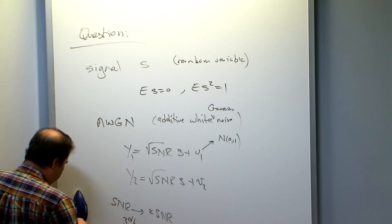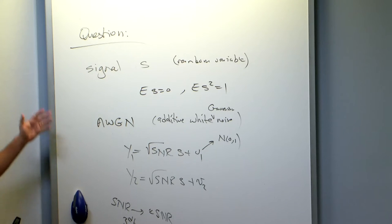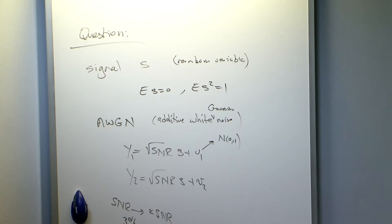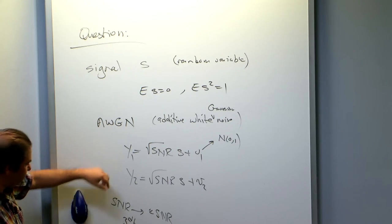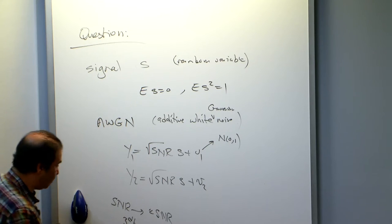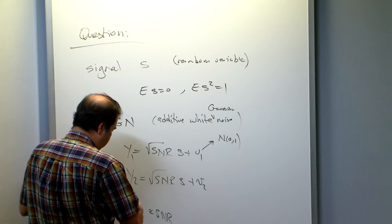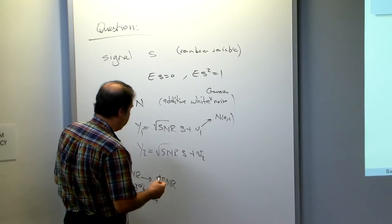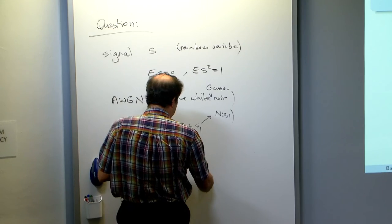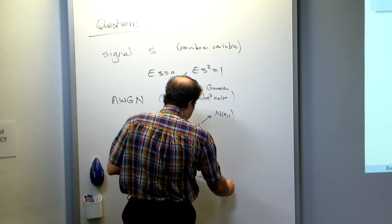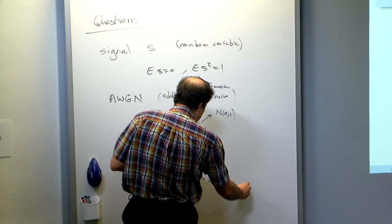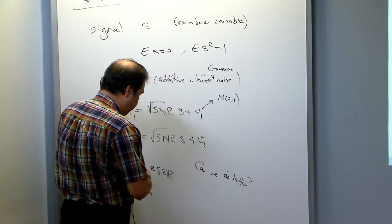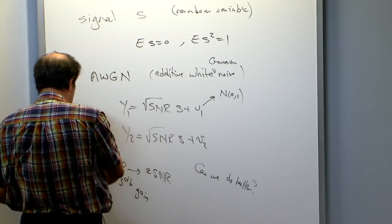This is by and large what is always done. This is real time — there's no coding going on. I have a single random variable to convey and I get two channel uses, giving me 2×SNR. So the question I want to ask, and I'll let you think about it: can we do better? I could build a whole talk around this question, and I'll give you the answer maybe at the end.